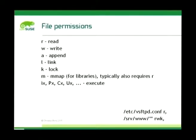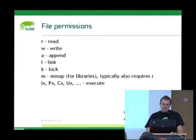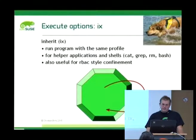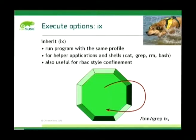There are different file permissions: read, write, and a separate permission for append — which you should use for log files. L is for link permissions, K for file locks, M for mmap for loading libraries. And there are various execute modes. IX for inherit means the program runs with the same profile — useful for helper applications and shells like cat, grep, rm, bash. You can also use it for role-based access style confinement, confining a user's shell to a specific set of programs all in inherit mode.